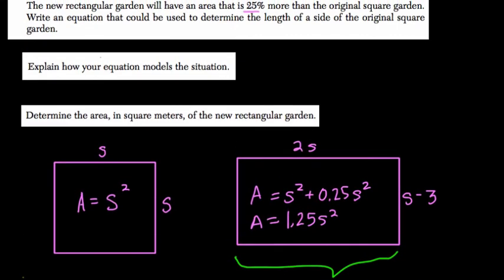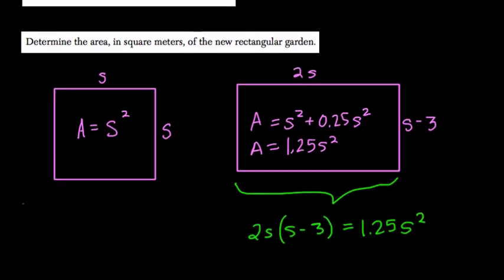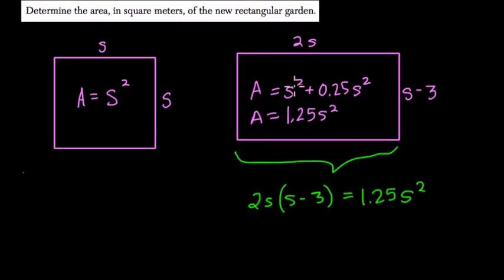Now they want us to determine the area in square meters of the new rectangular garden. So here, we want to find the length of S, right? In order to find the area of this garden, I'm going to find what S actually is, and then apply that to find the area.